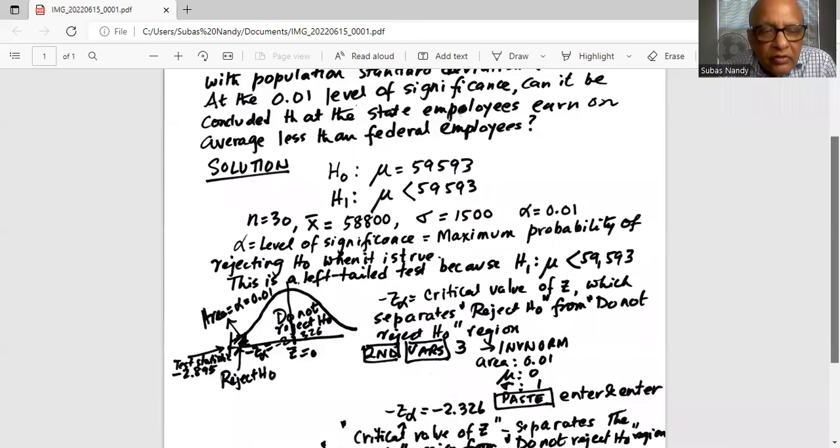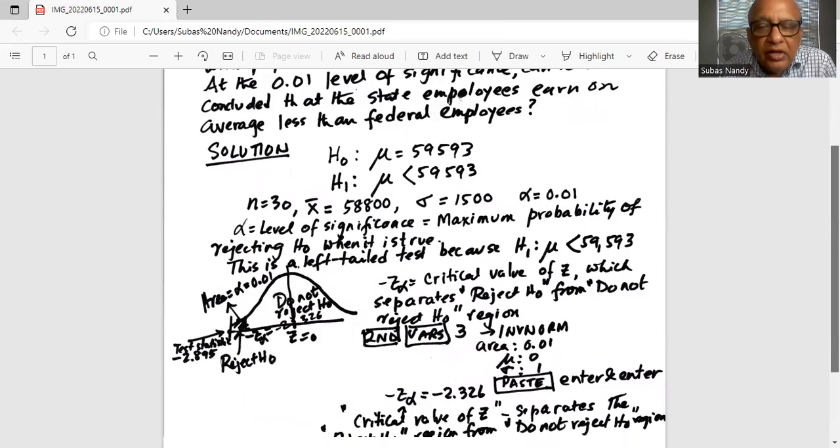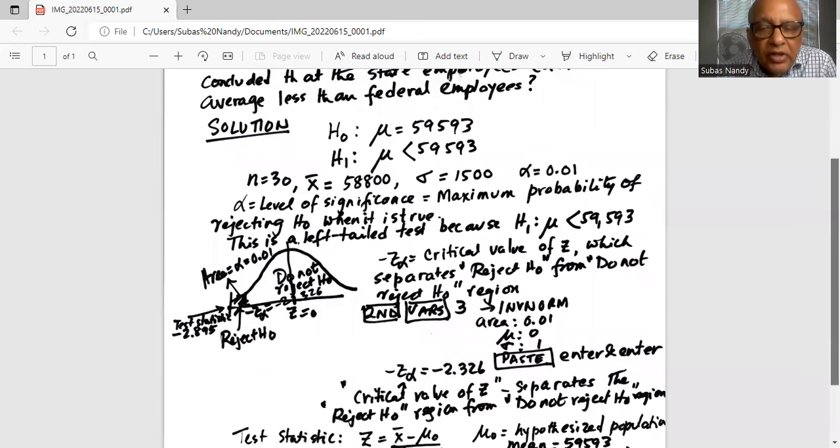That is, area on the left is given, which is 0.01. And mu is 0. Sigma is 1. Since we are dealing with standard normal curve, we bring the cursor down and paste and hit enter and enter. Minus Z alpha is minus 2.326.